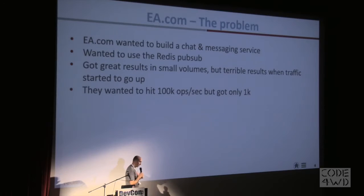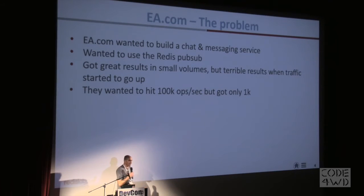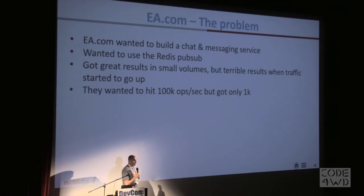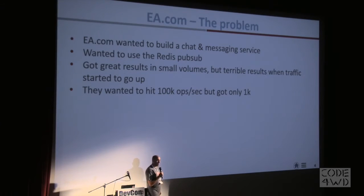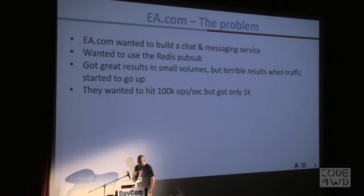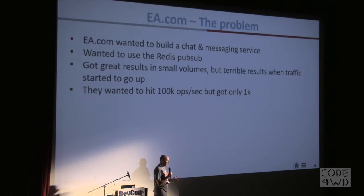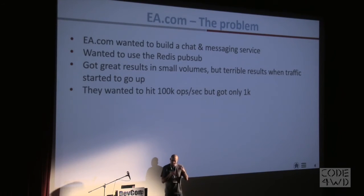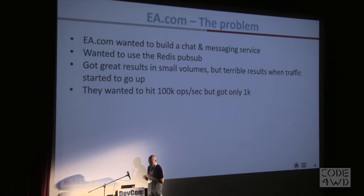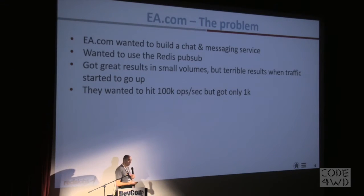We are now managing more than 160,000 databases — and that's all the marketing you'll hear today. EA.com wanted to build a chat and messaging service, which is quite ordinary for games. They wanted to use Redis as pub/sub since Redis is very fast. They got great results — great performance, sub-millisecond — when they had 1,000 operations per second. But when they started ramping up toward 100k, they saw very bad performance, into multiple seconds per request. So they came to us to consult and potentially use our product.